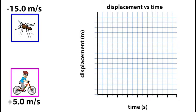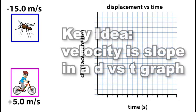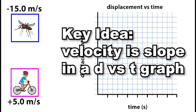In this graph, I'll be at the pink dot moving forwards at 5 meters per second, and the mosquito will be the blue dot moving backwards at negative 15 meters per second. And the key to remember here is those velocities are going to be the same as the slope on the displacement time graph.